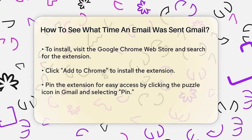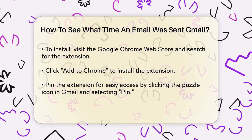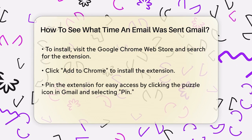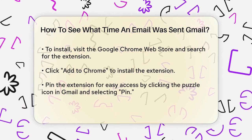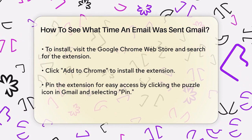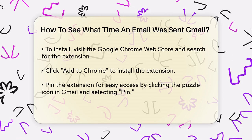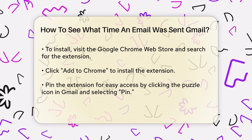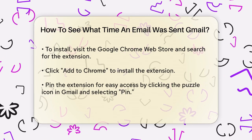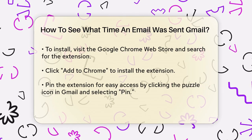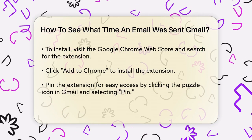Next, pin the extension to your Chrome browser for easy access. You can do this by clicking the puzzle icon in the top right corner of your Gmail inbox, locating the Display Email Time extension, and clicking the pin icon next to its name.